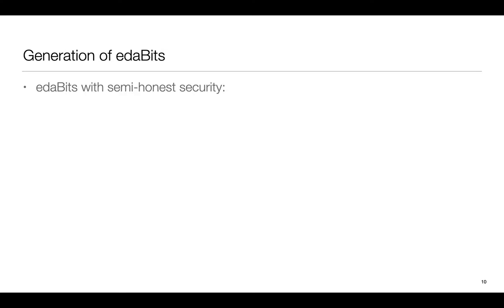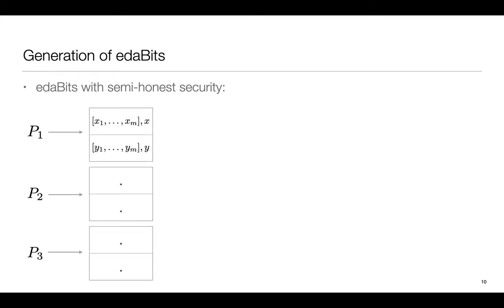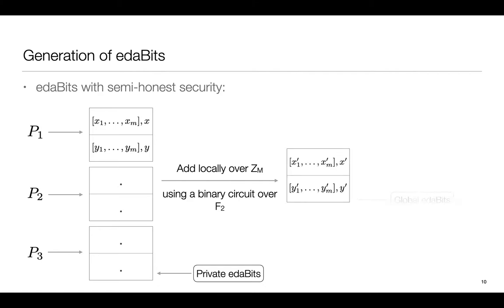At a high level this is how we generate EDABITS across different security models. In the semi-honest case it's pretty straightforward how we generate them. We can let each party secret share a set of EDABITS which I will refer to as private EDABITS because one of the parties knows the underlying value for each of these EDABITS. Taking one private EDABIT from each party and putting them through an adder circuit gives us what we call global EDABITS. Global because none of the parties know the underlying value.